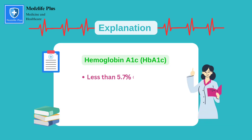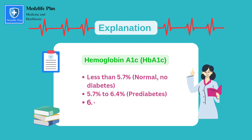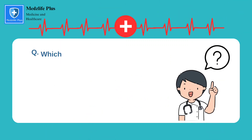HbA1c reference ranges: less than 5.7% means normal or non-diabetic; 5.7% to 6.4% indicates prediabetes; 6.5% and above indicates diabetes.